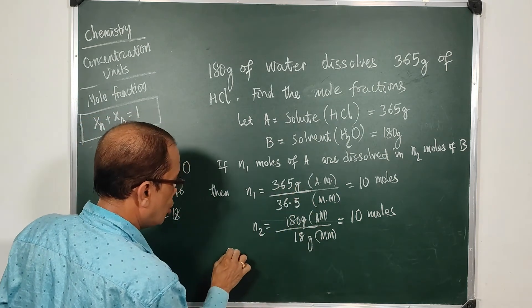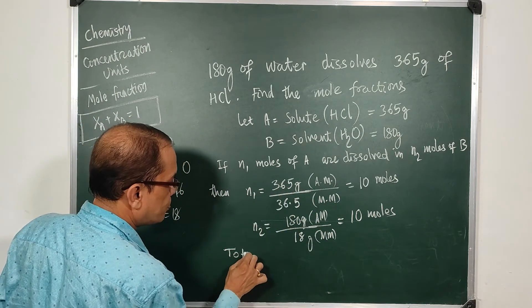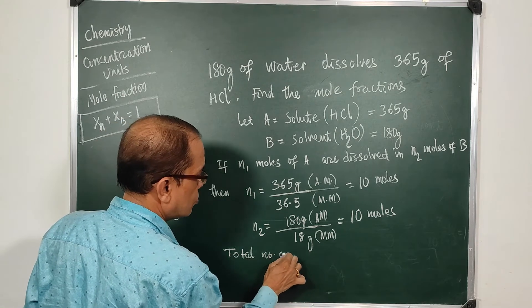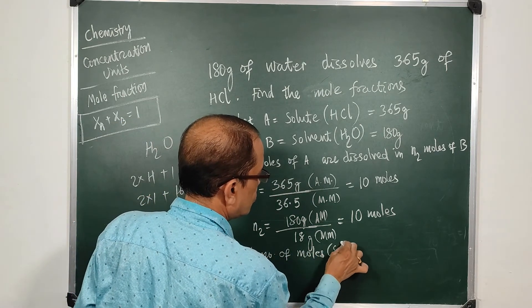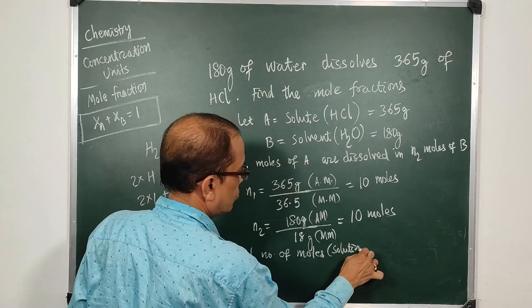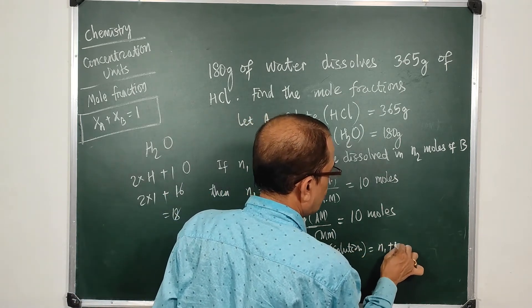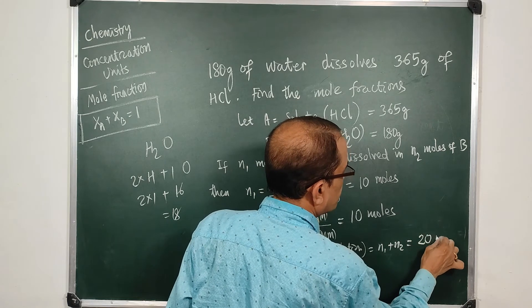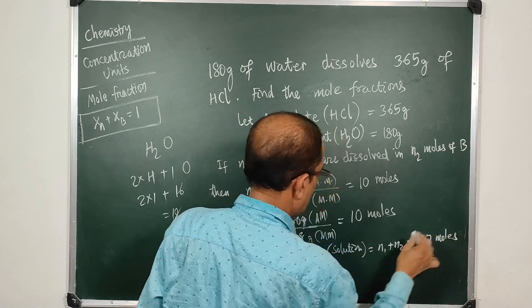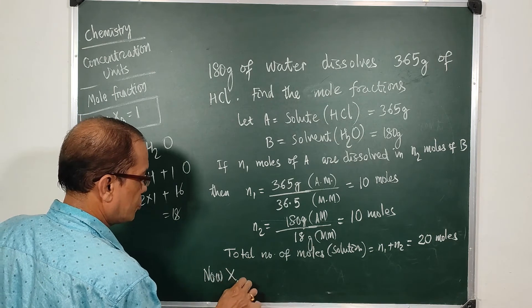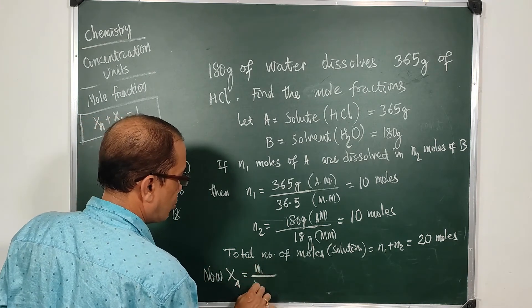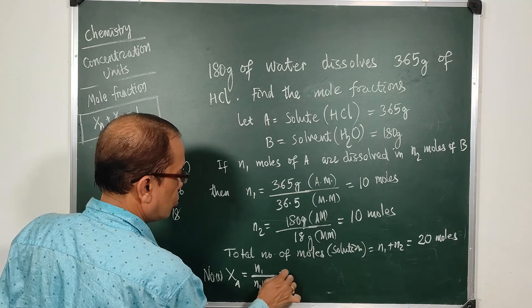So clearly here n1 is 10 moles, n2 is 10 moles, so total number of moles in solution is 20 moles. So now mole fraction of A is n1 upon n1 plus n2, which is 10